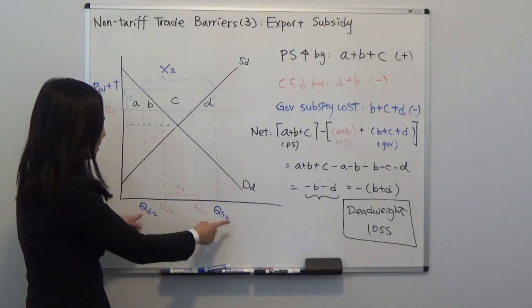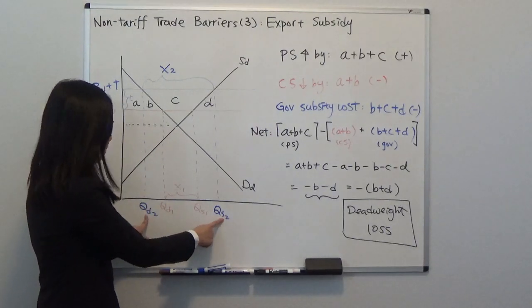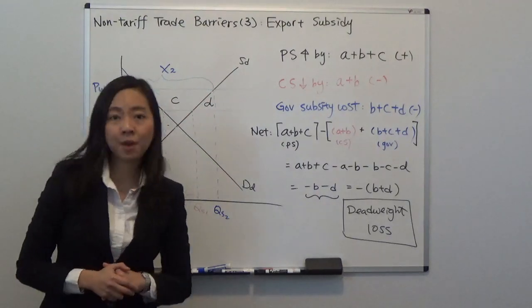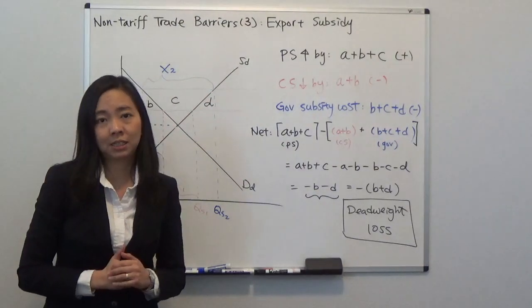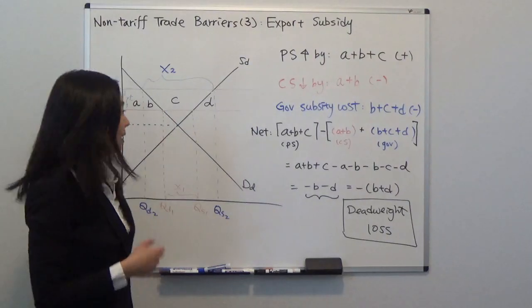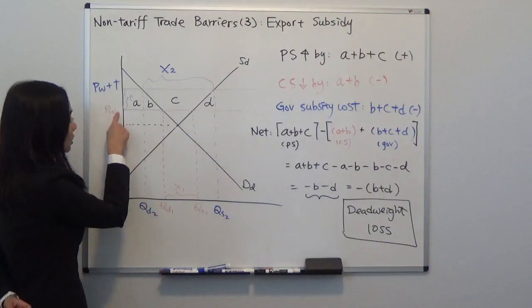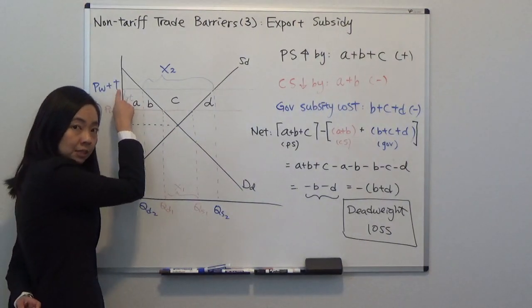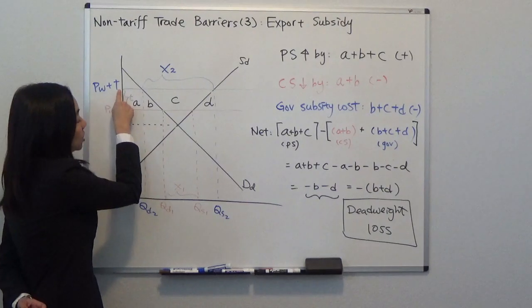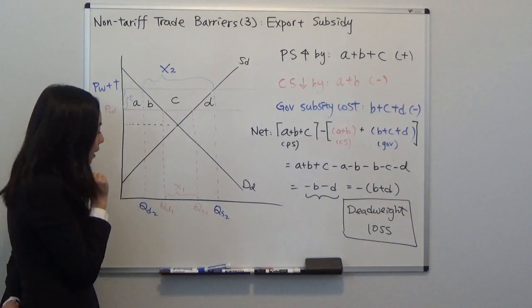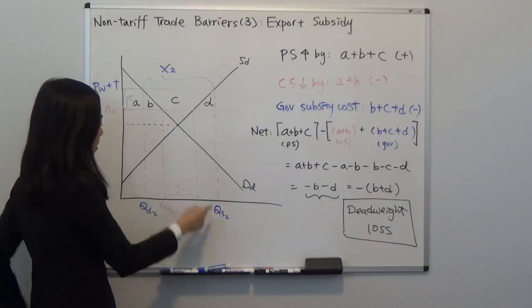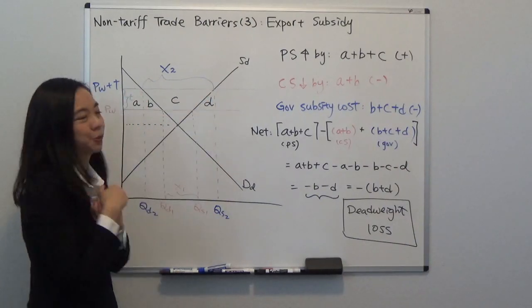Now you can see the difference QS2 minus QD2 will be our new export. So the export subsidy increases the price from PW to PW plus T locally, and that increases our export from X1 to X2.